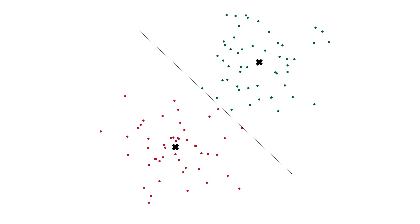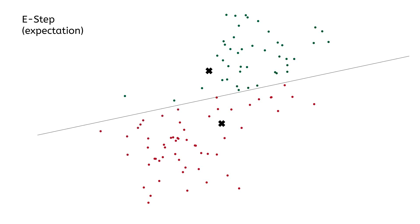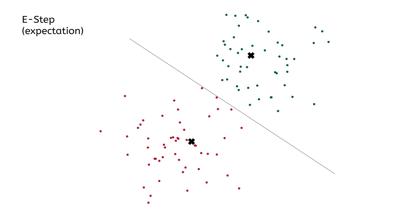If you watched some of my other videos about the EM algorithm, you may have recognized that this is exactly an application of it. When we draw the separation line, this corresponds to the E step. Where we update our parameters — that is the means — we have our M step. We repeat that process until convergence.